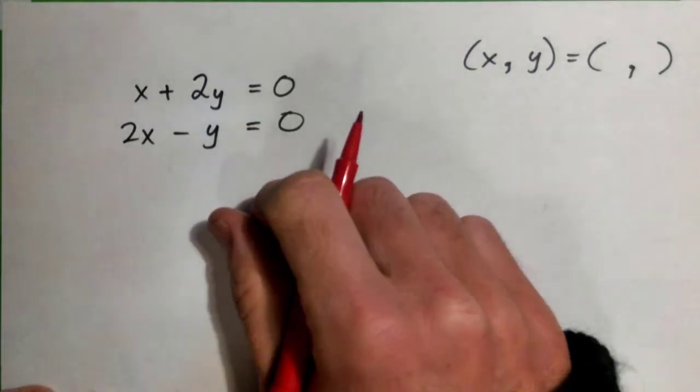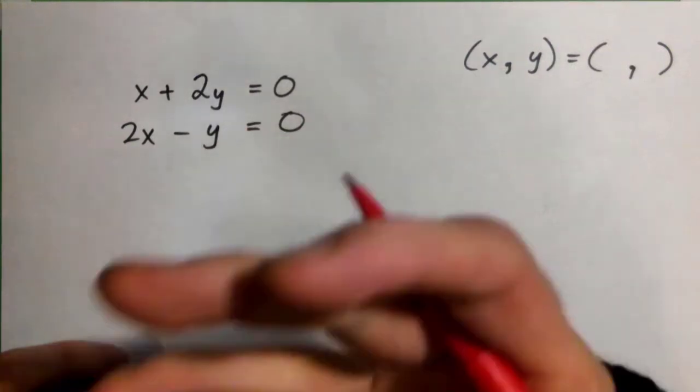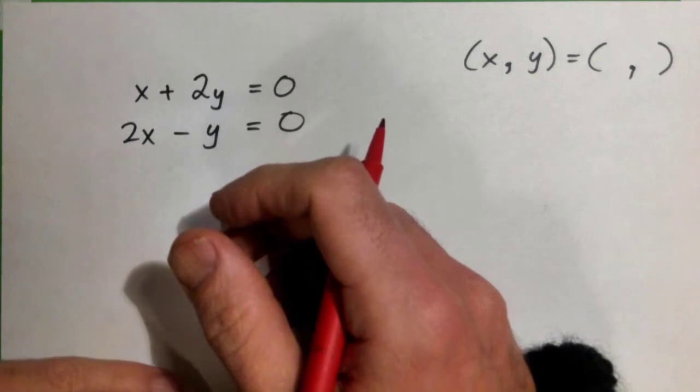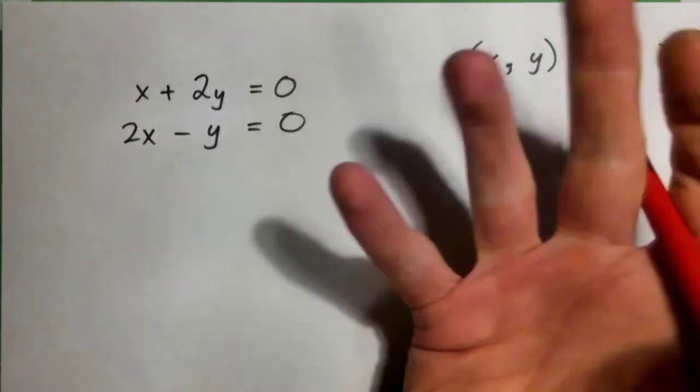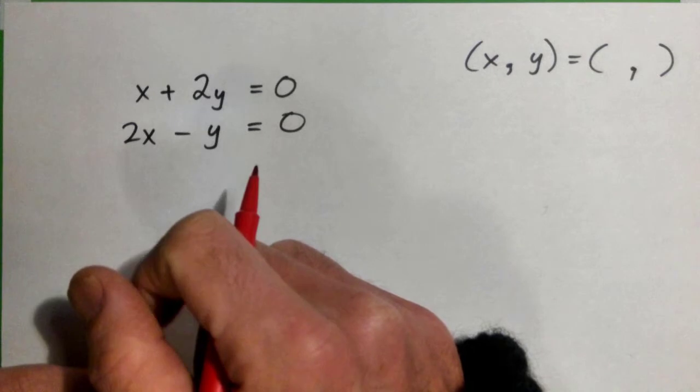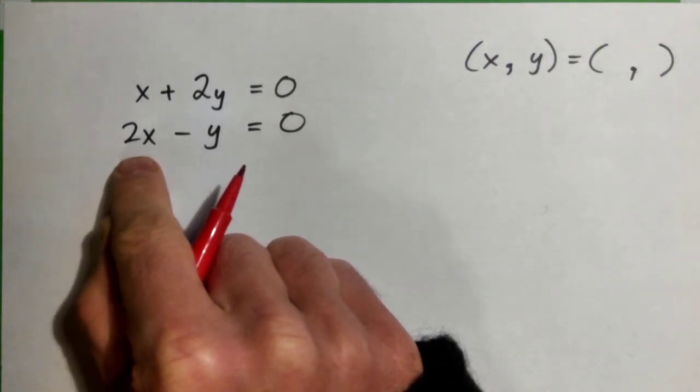Solving by elimination is where we add the equations together to eliminate one of the variables, and that helps us solve it. Should we get rid of the x's or the y's? It doesn't matter, you can do either way. Let's see the x's - I see a 2x here. 2x added to what would give zero?